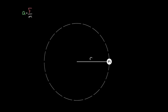We know from Newton's second law that the acceleration is proportional to the force. What we would like to have is some sort of rotational analog of this formula — something that would tell us we'll get a certain amount of angular acceleration for a certain amount of torque. By knowing the torque, we could figure out what the angular acceleration is, just like by knowing force, we could tell what the regular acceleration is.